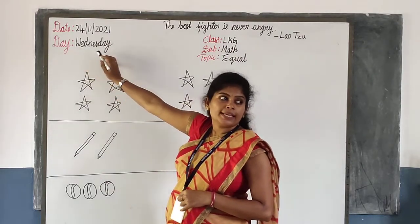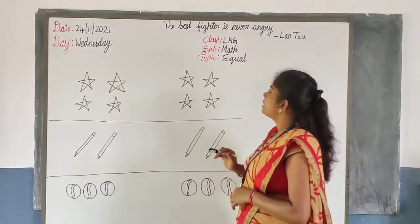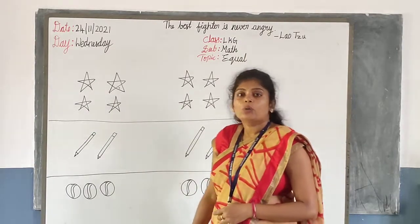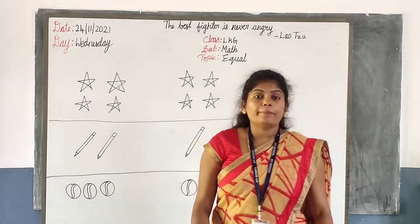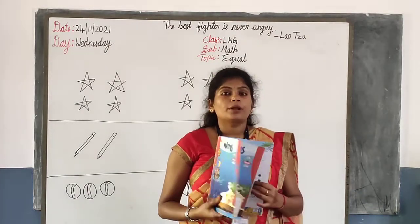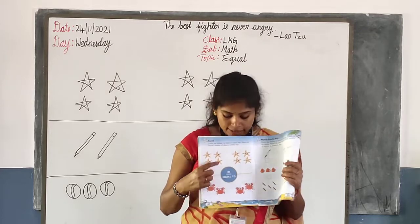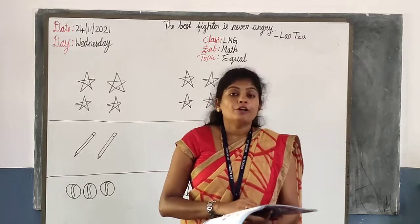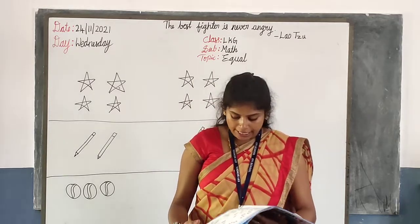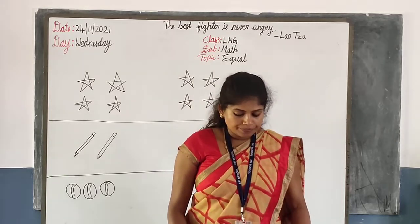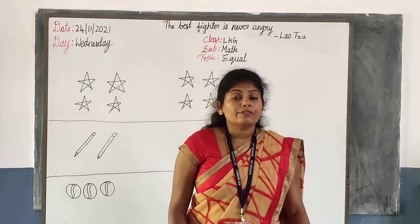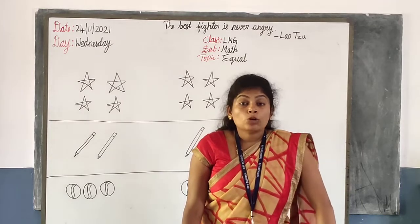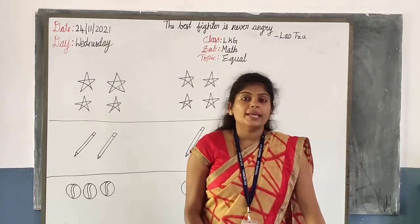Wednesday: W-E-D-N-E-S-D-A-Y. The class and the subject is math. What is the topic, children? Take your math book, page number 50. Please write today's date — this is your class book, page number 50. In our previous class, we are in the third lesson. The lesson name is 'Comparing Quantities.'